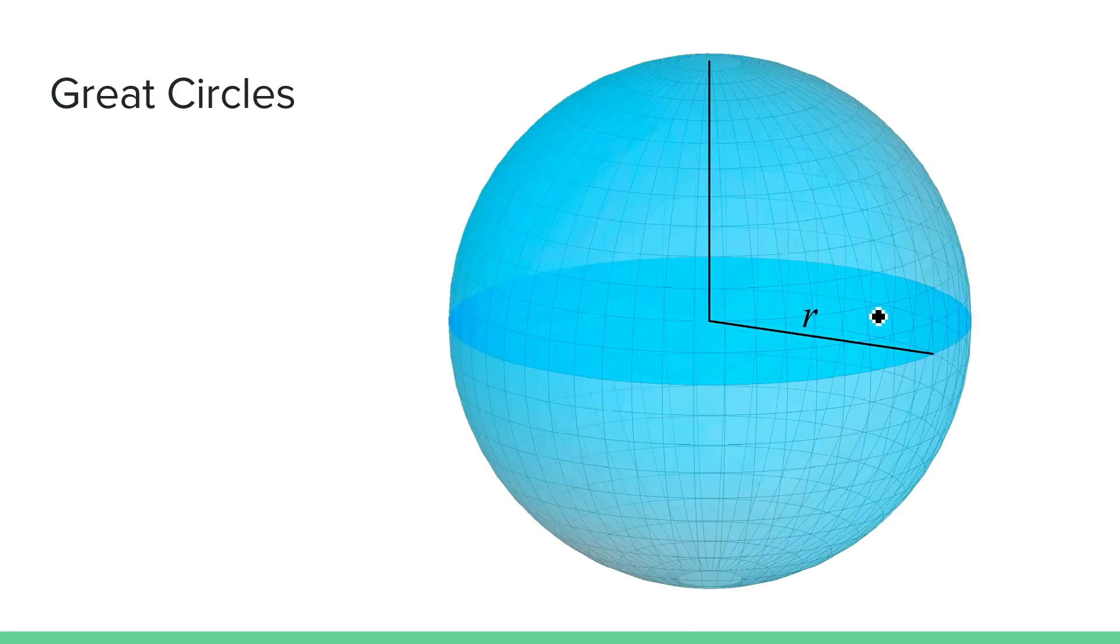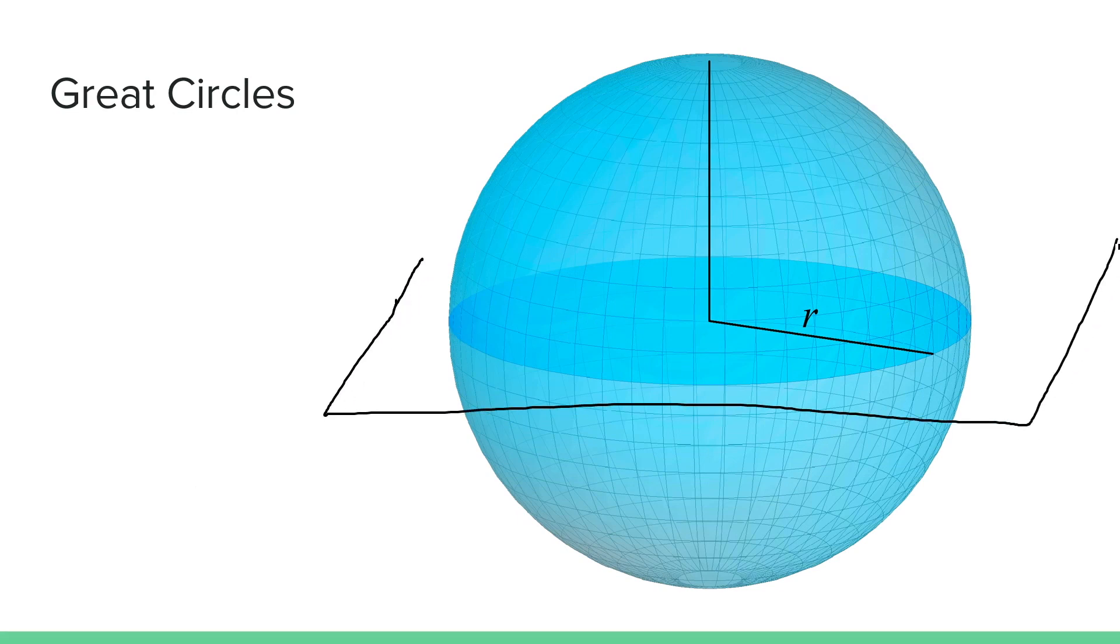Now imagine the plane intersects the sphere, and also intersects the center of the sphere. The circle that's formed would divide the sphere into two equal hemispheres, and would have the same radius as the sphere itself.